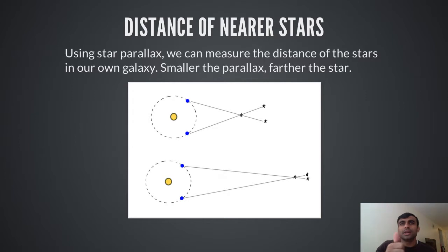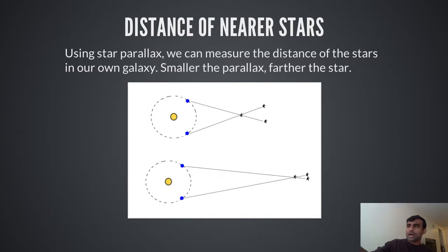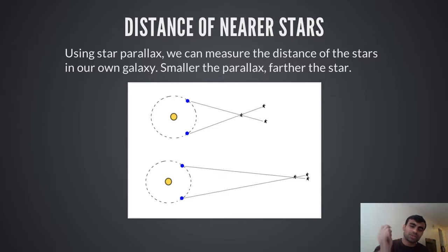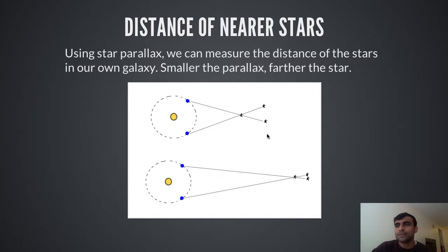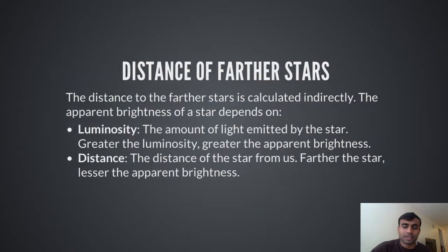Parallax is the relative displacement of an object against the background of a farther object. If I hold up my thumb and look at it against a distant tree, the tree appears stationary while my thumb seems to move as I move my head. Similarly, when the earth goes around the sun, stars that are near us appear to shift position against the backdrop of other stars — that's parallax. Parallax is not visible for very distant stars, but for closer stars it is visible, and using the apparent displacement you can estimate the distance.